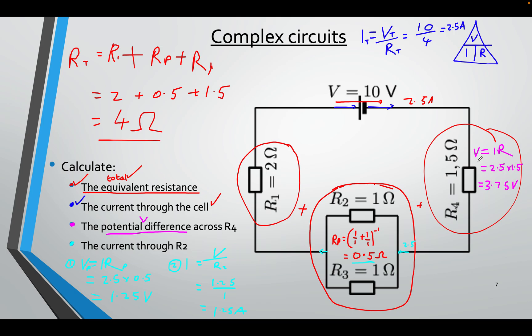If I want to find the voltage across R4, or even R1, I can use Ohm's Law. I can do V equals IR. I can do 2.5 times 1.5, and I will get 3.75 volts.